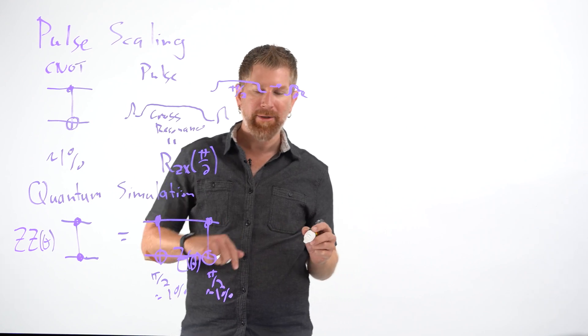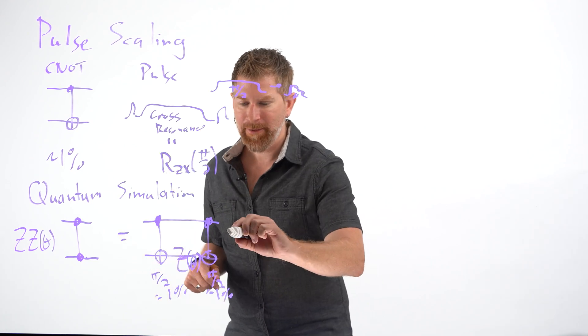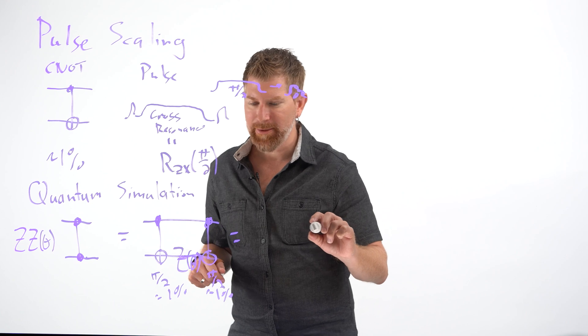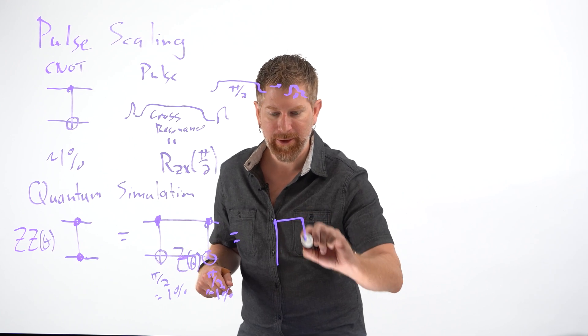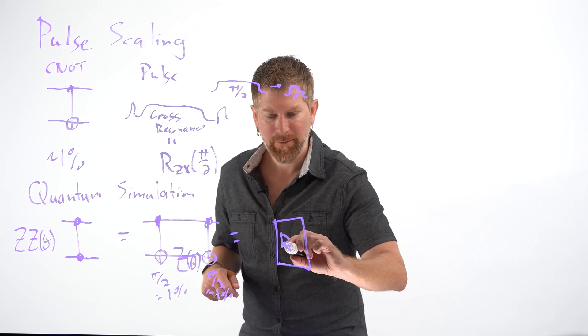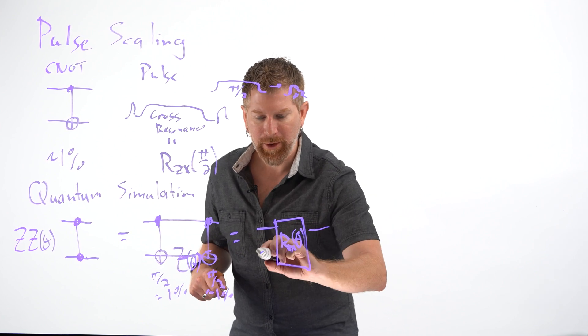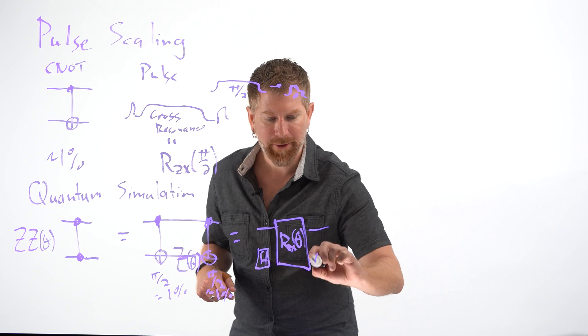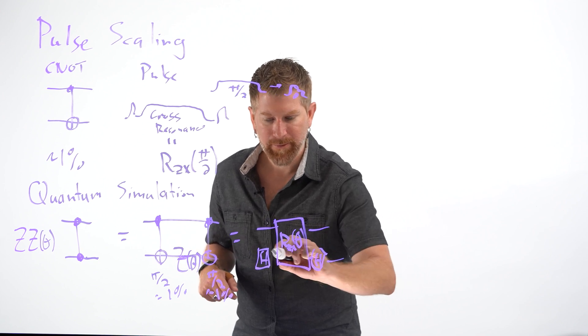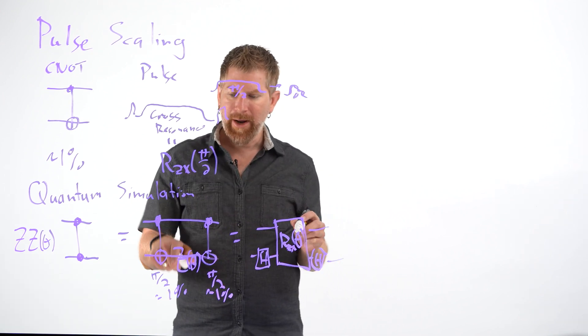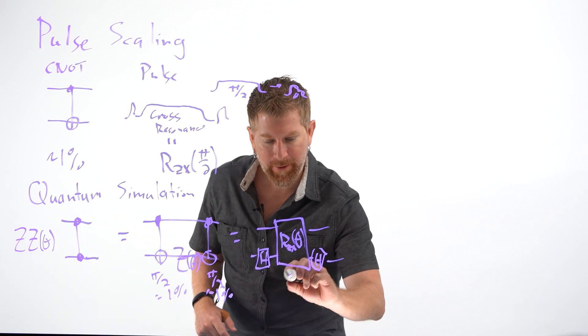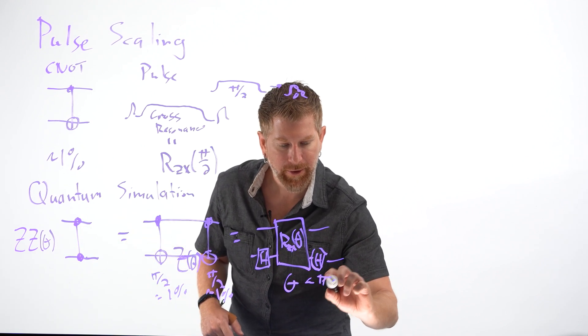But I know I can rewrite this in terms of an RZX gate. So this is actually the same as something that looks like an RZX gate, RZX theta. And then we can turn it into a ZZ by just applying Hadamards on either side. Now the thing is this angle is usually small, often below say pi over 3.